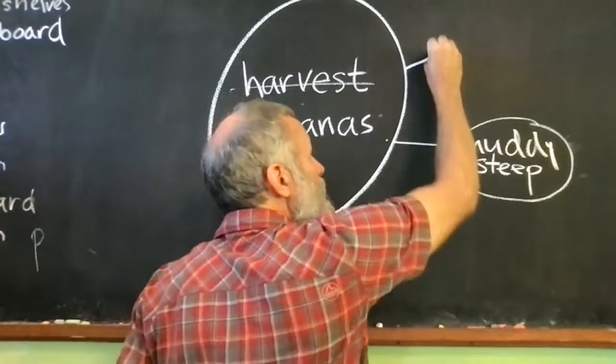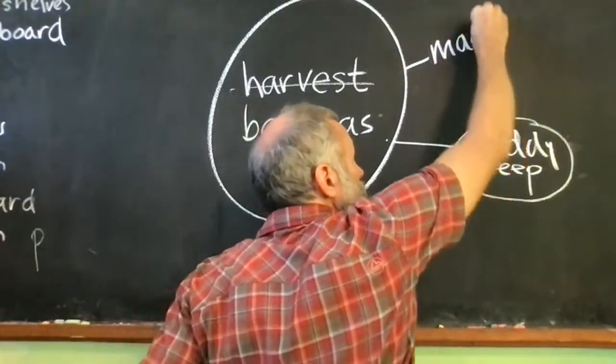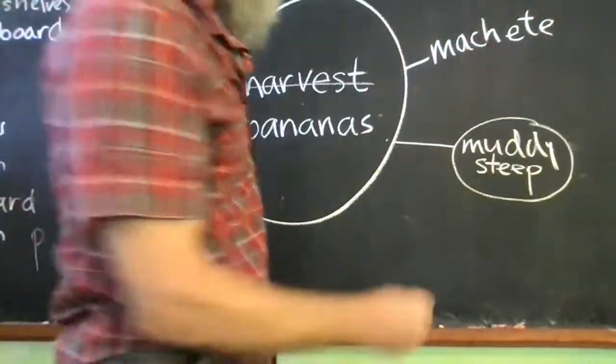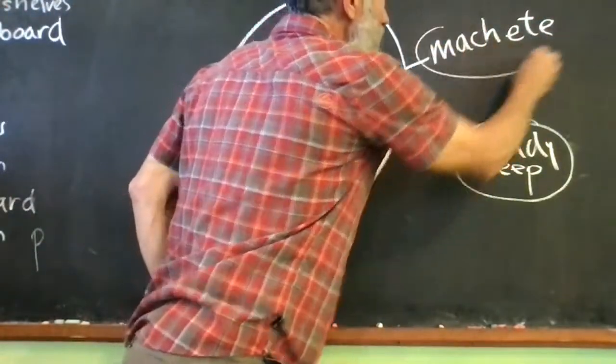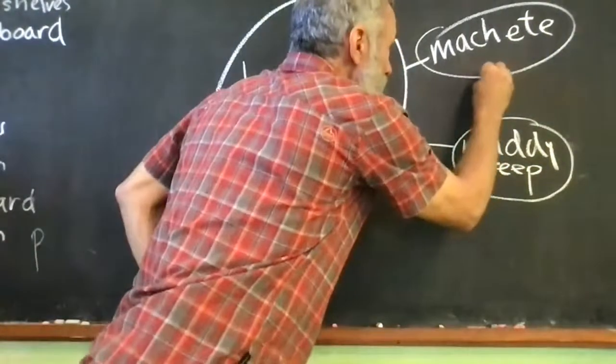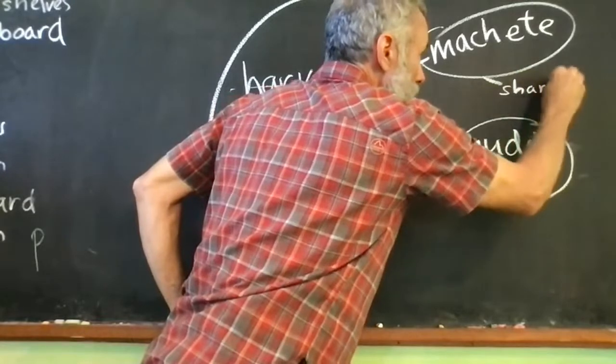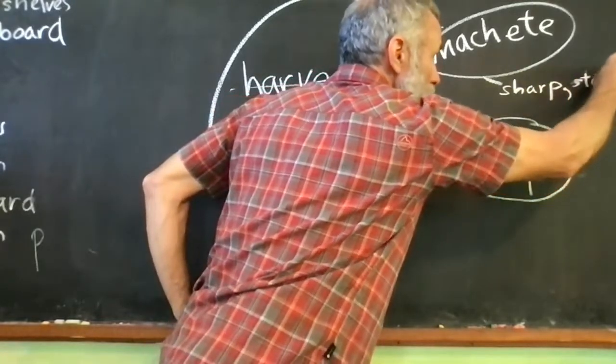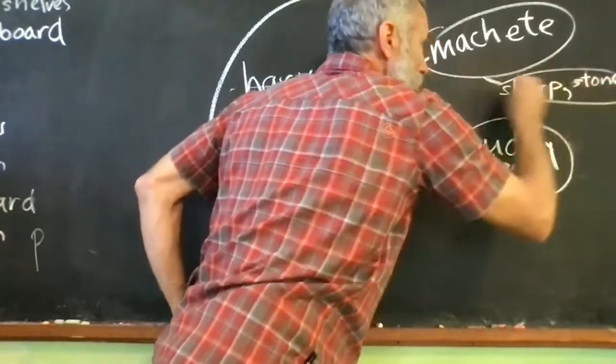Also, the tools I use, I use a machete. I think that's how you spell machete. And then machete, of course, there's something else I could say about that. It has to be sharpened. So I can write sharp. I can write stone because I used a stone to sharpen it.